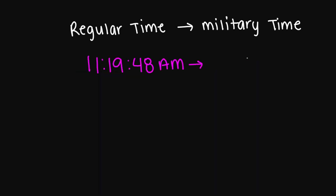So let's try this regular time. We have 11:19 a.m. So military time is going to be 1119:48 hours. Or if you're going to add the colon, you're going to write 11:19:48 hours.